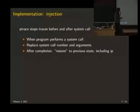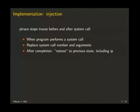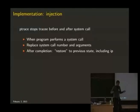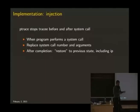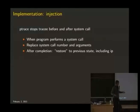How do we implement system call injection? When the program performs a system call it is stopped and then we can do whatever we want — we can change the registers, the instruction pointer, the stack pointer, the frame pointer. All the system call arguments are in the registers so we can change them. We change the system call number and then a different system call is executed with different arguments. Once the system call is done, we reset the instruction pointer to the previous instruction, which was the system call, and restore the registers to what they were before. So you don't actually modify the program aside from whatever effects the system call has.